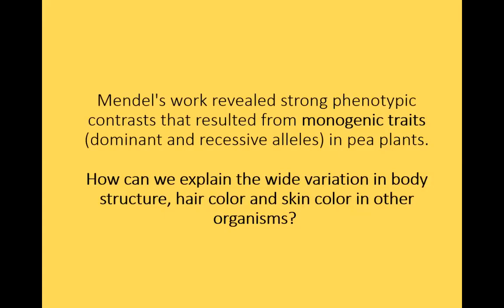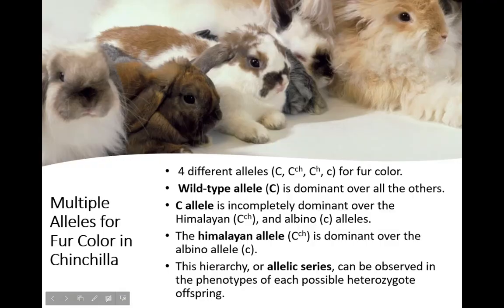Mendel's work revealed that strong phenotypic contrast can result from monogenic traits — traits determined by either dominant or recessive alleles, like capital A versus recessive a. However, not all traits are like that. How do we explain variations in body frame, hair color, fat distribution, and skin color? That's because body traits are not always coded by just two different alleles — sometimes there are more than two alleles for one particular trait.